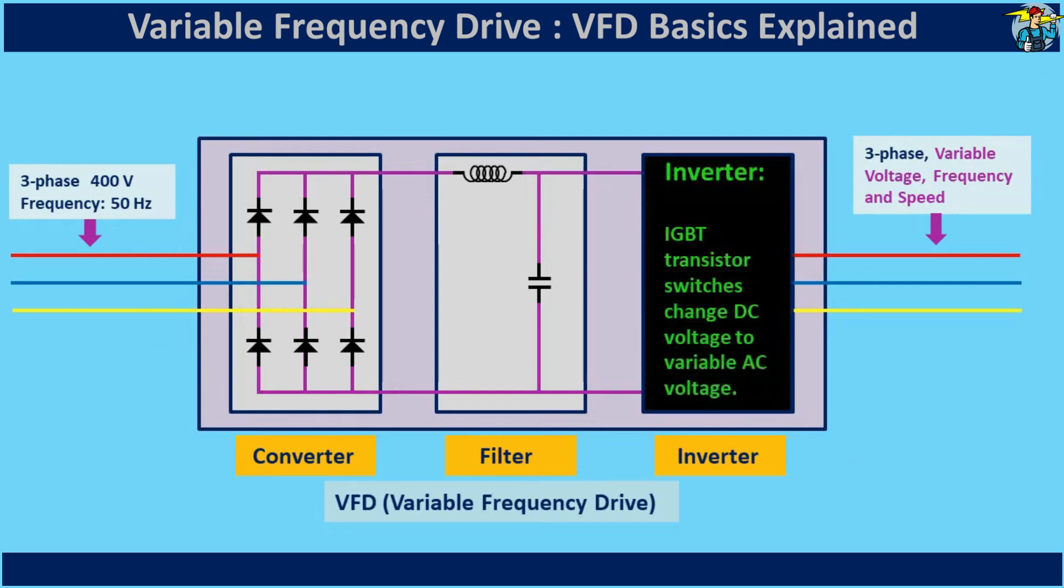The inverter consists of insulated gate bipolar transistors, also called IGBT switches. These transform DC voltage back into AC, but now with variable control function.